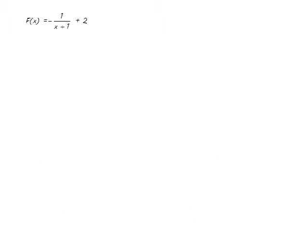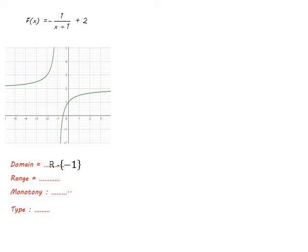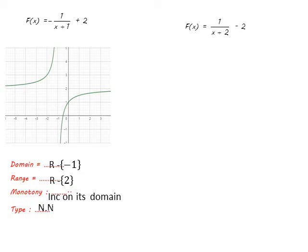For f(x) = -1/(x + 1) + 2, the point of symmetry equals (-1, 2), and the function will be drawn in the second and fourth quadrants. The domain is ℝ except -1, and the range is ℝ except 2. The function increases on its domain, or on ℝ except -1. It is neither even nor odd.